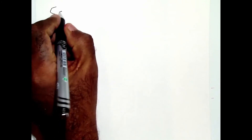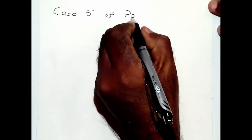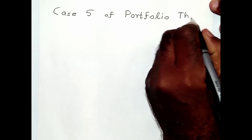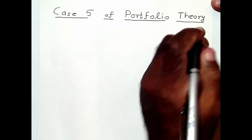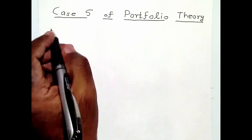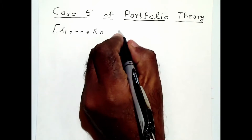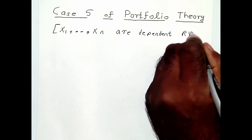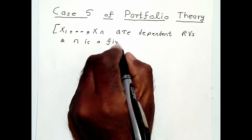Hi, in this video I will talk about case 5 of portfolio theory. Just to remind you, case 5 is where the losses x1 to xn are dependent random variables, and n, the number of investments, is a fixed number.